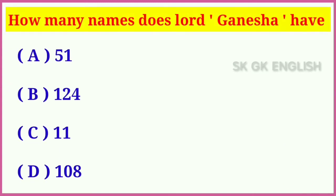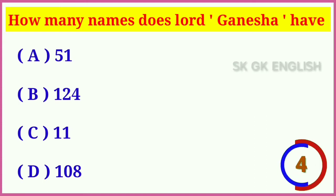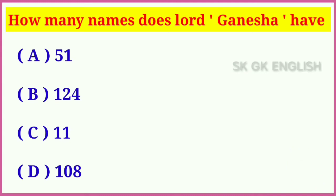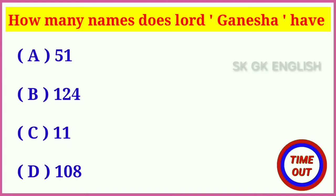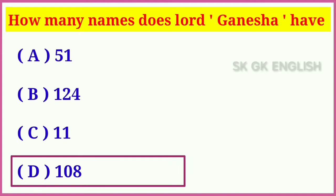Question number two: How many names does Lord Ganesh have? Options are: A. 51, B. 124, C. 11, D. 108. Correct answer is D. 108.